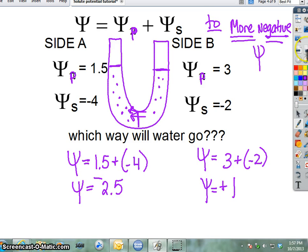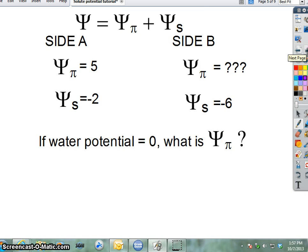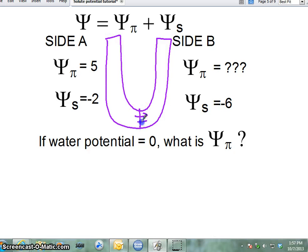Alright. So here's another problem. A little bit different. This time, I'm telling you that the water potential is 0. So I'm telling you that water's going both directions equally at this point. And I tell you that the solute potential on this side is negative 2, and the solute potential on the right side is negative 6. Now, technically, if pressure wasn't playing a role, which way should the water go? To the right. But because of pressure, we know that it's actually equalized. Water's not going to the right.